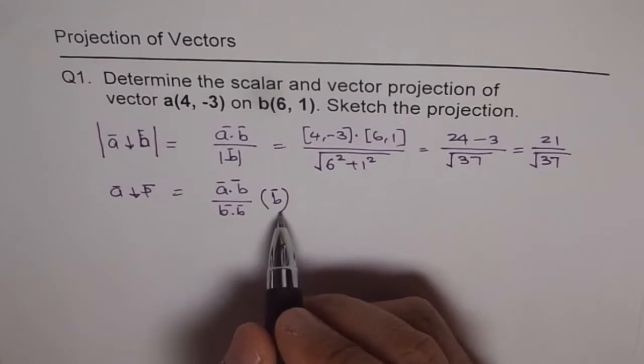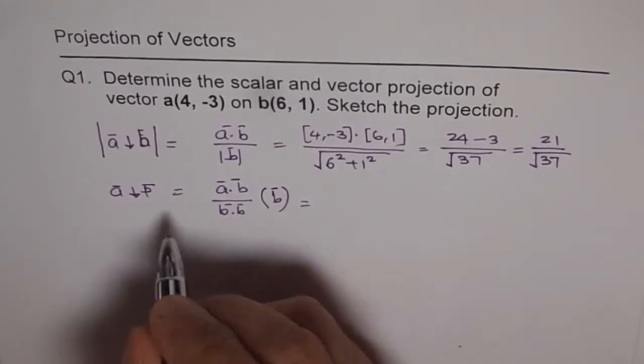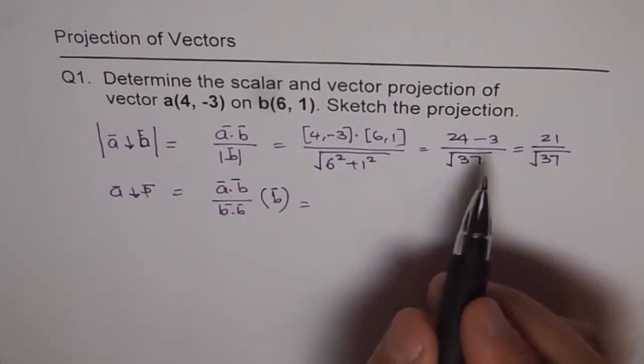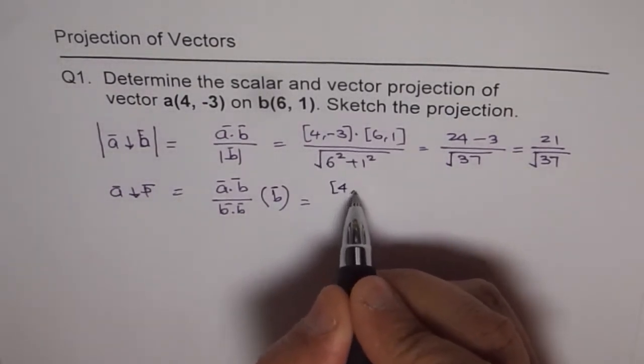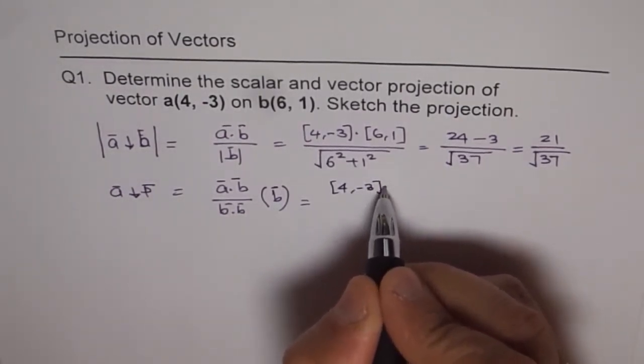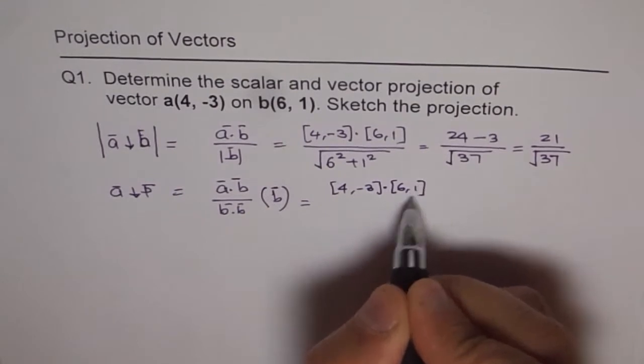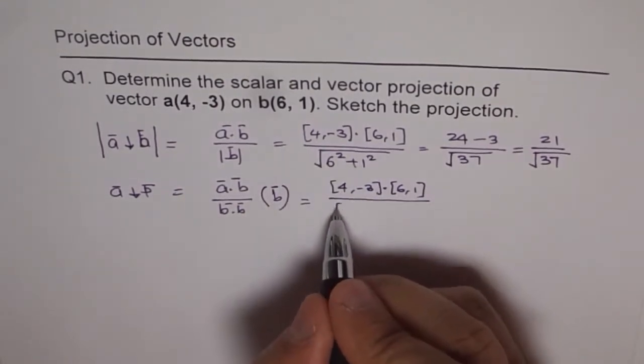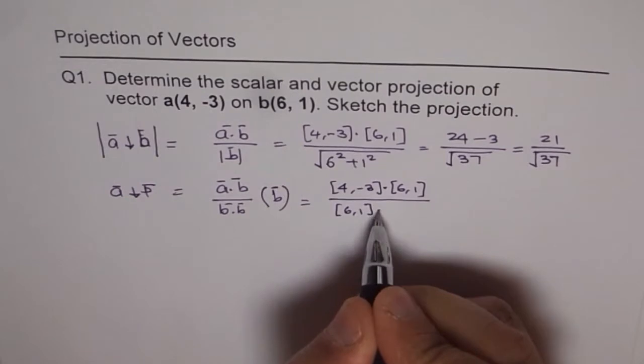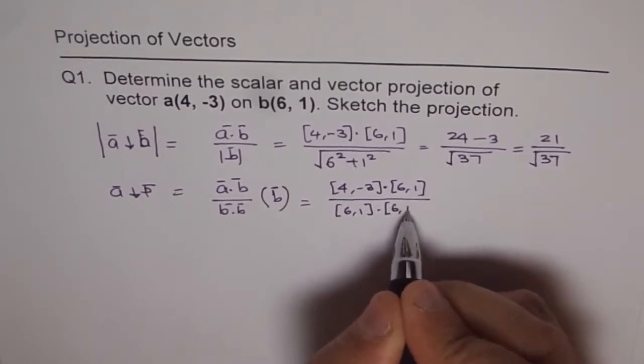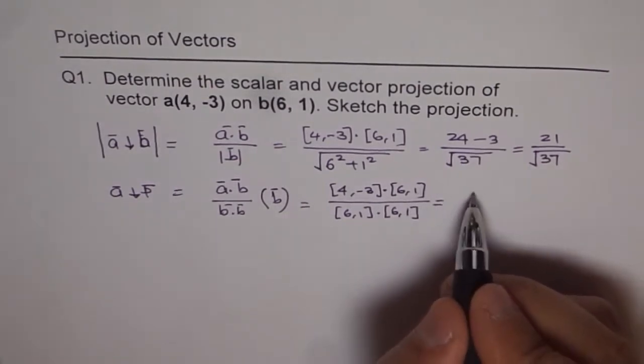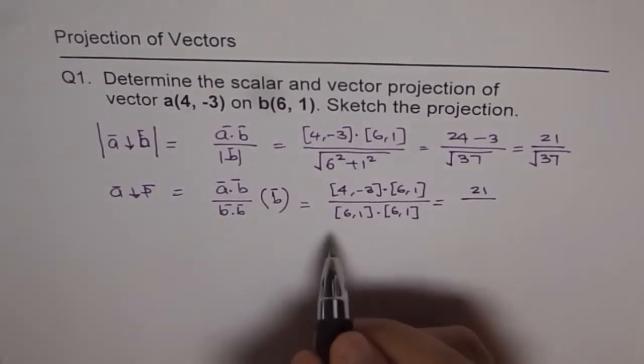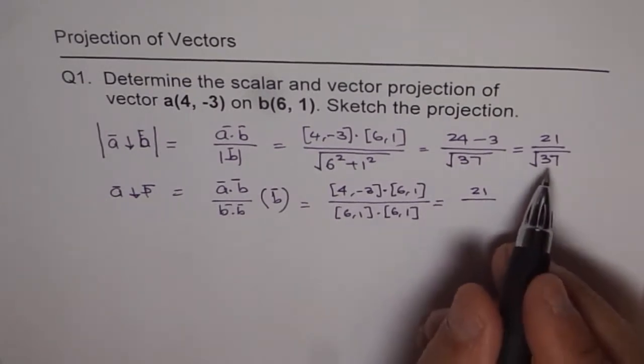In vector projection, you have the direction and it is along the direction of B. So we get A dot B, we already calculated A dot B, so I'm going to use the same value 21. So we will just write (4,-3) dot (6,1) over B dot B which is (6,1) dot (6,1). Now that is 21 in the numerator and denominator is same as 37.